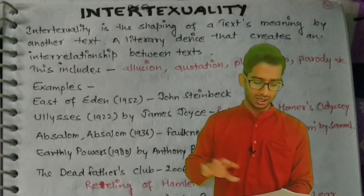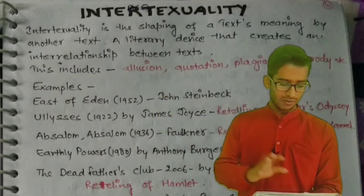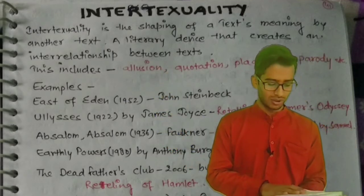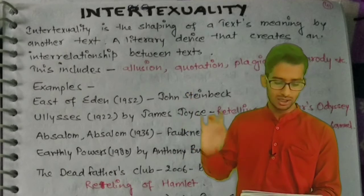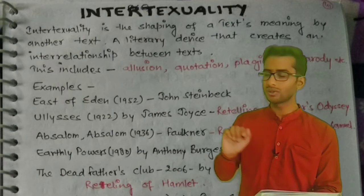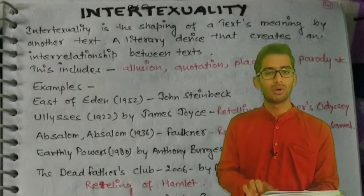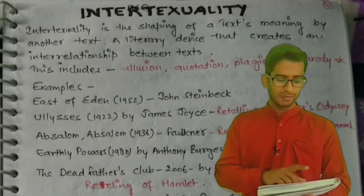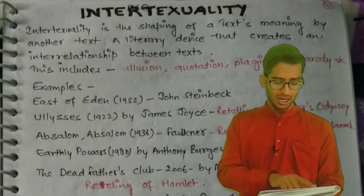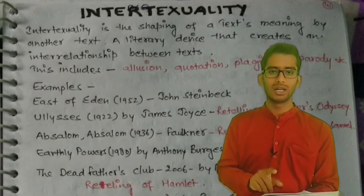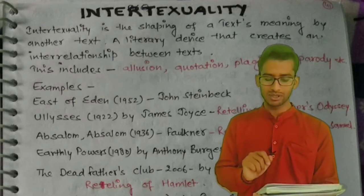Here are some examples of intertextuality. First is 'East of Eden' (1952) by John Steinbeck. Second is 'Ulysses' (1922) by James Joyce, which was a retelling of Homer's Odyssey. Third is 'Absalom, Absalom!' (1936) by Faulkner, which was also a retelling of the Absalom story.